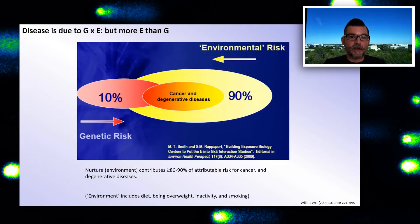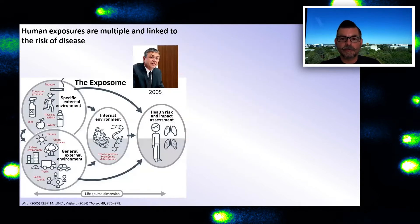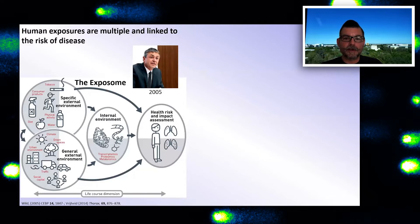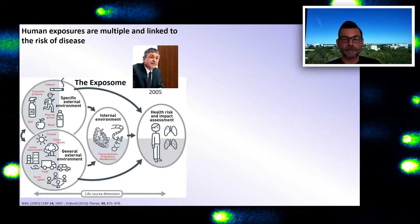Disease is due to gene-environment interactions, but it's more environment than gene, so we need to look at the environment. Back in 2005, Chris Wild, then director of IARC and professor of molecular epidemiology at the University of Leeds, came up with the idea of the exposome — drawing on the concept of omics as the totality of something, such as transcriptomics, proteomics, and genomics, and extending this to exposure.